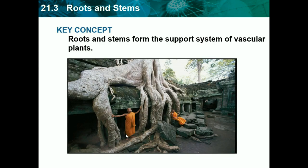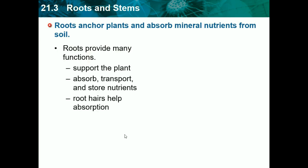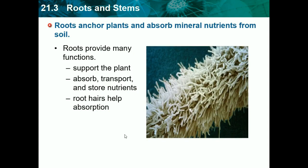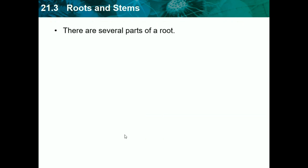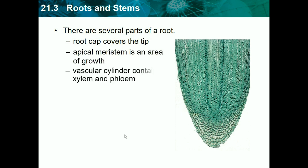Section 21.3 is roots and stems. The key concept is that roots and stems form the transport system of vascular plants. Roots anchor plants and absorb mineral nutrients from the soil — they give plants the ability to stand upright. Root hairs help absorption by increasing surface area to absorb more minerals efficiently. There are several parts of the root: the root cap covers the tip, the apical meristem is an area of growth, and the vascular cylinder contains xylem and phloem.